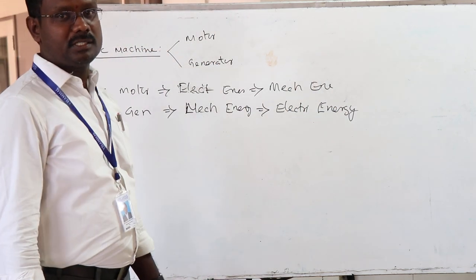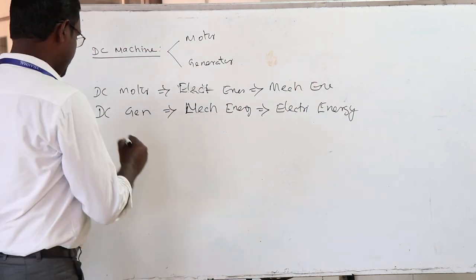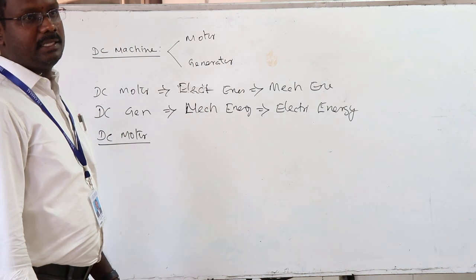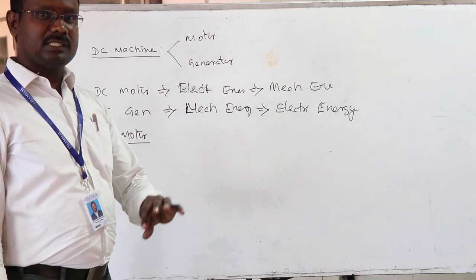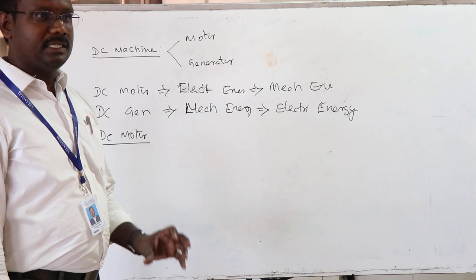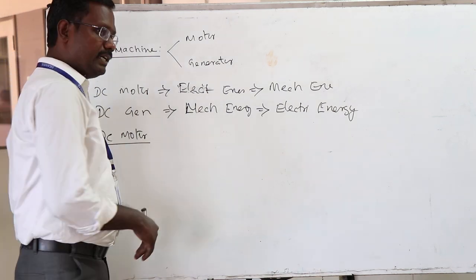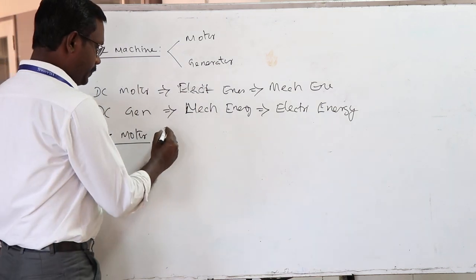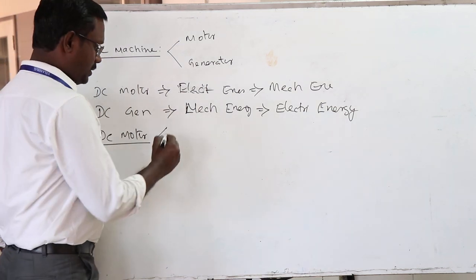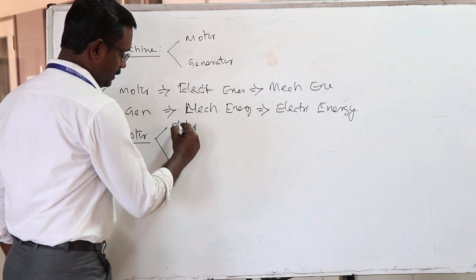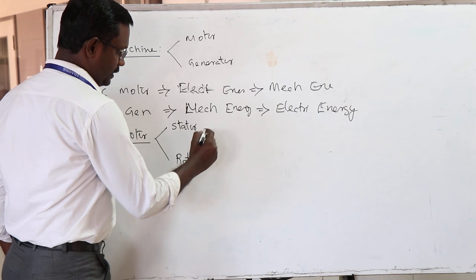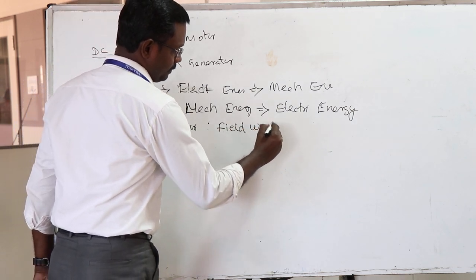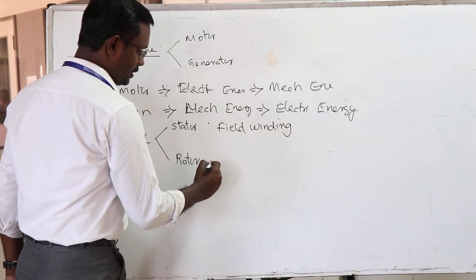Now we are going to discuss about DC motors. The DC supply will be given which is converted into mechanical energy. There are two main parts in a DC motor. One is the stator, which means field winding, and another one is the rotor, which means armature winding.